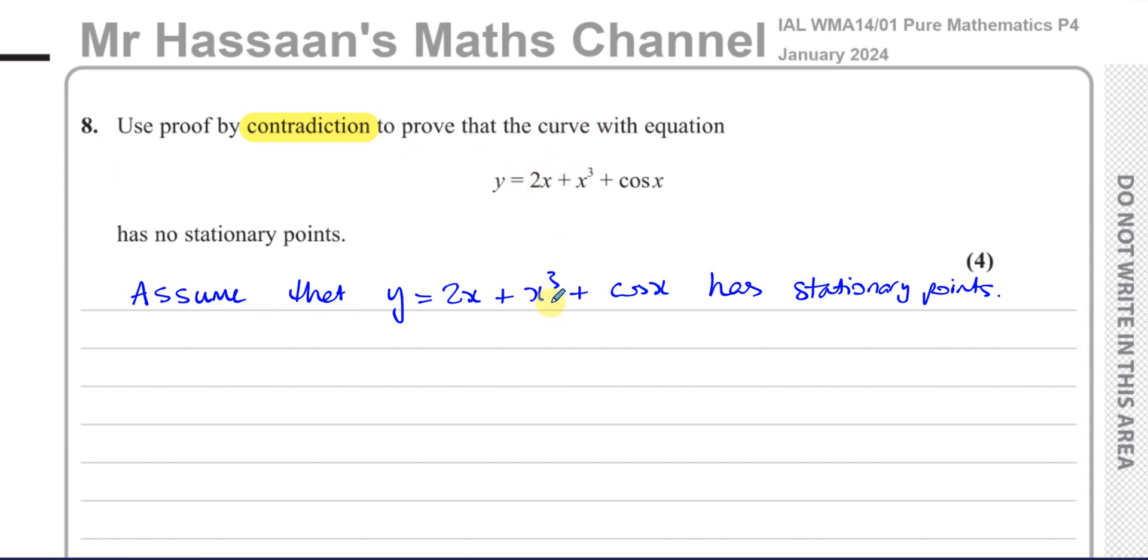We're trying to prove it has no stationary points. So we're saying that it does have stationary points. Now we know that a stationary point is a point of zero gradient, like a maximum point or a minimum point where the gradient is equal to zero at that point, or even a point of inflection, but the gradient is going to be zero at the stationary point. So we can say that at the stationary point we know that the gradient is zero. Therefore we can say that dy/dx is going to be zero.